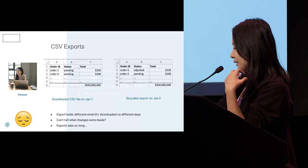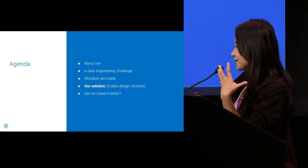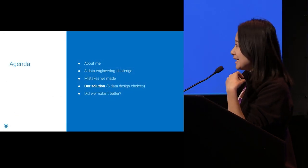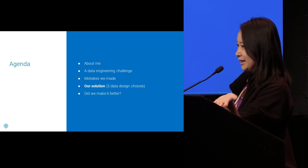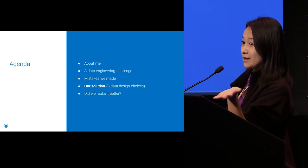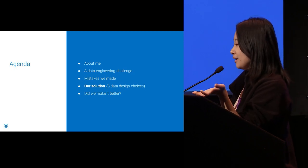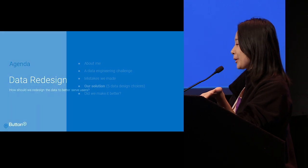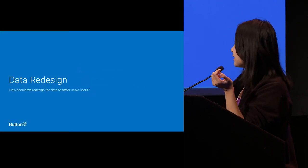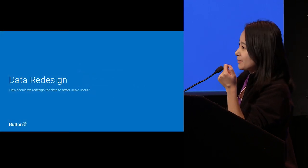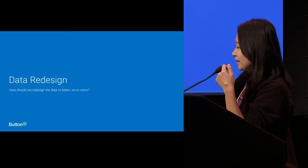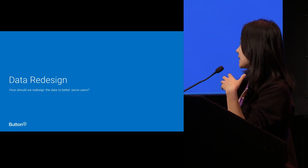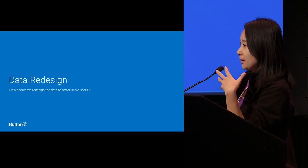We saw a lot of discontent from users of financial data across the company, and because of that discontent we were given a second chance to rebuild the system for the better. These are the five data design choices we made.